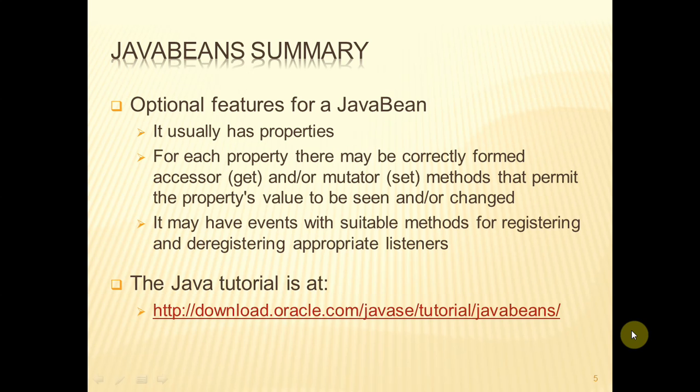Some optional features. Well, a Java Bean will usually have properties. In other words, some variables in which to store data. And for each of those properties, you might have one or both of the following: an accessor method, a get method, or a mutator method, a set method.